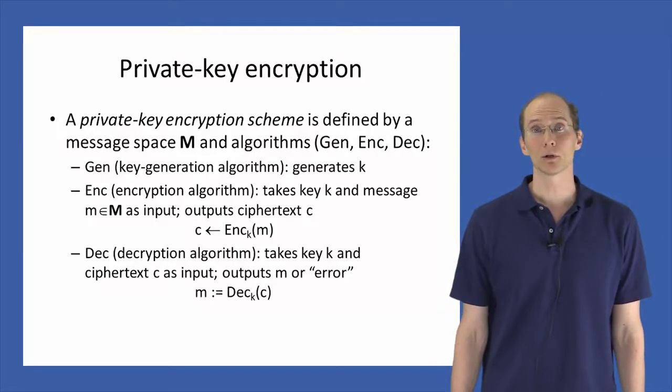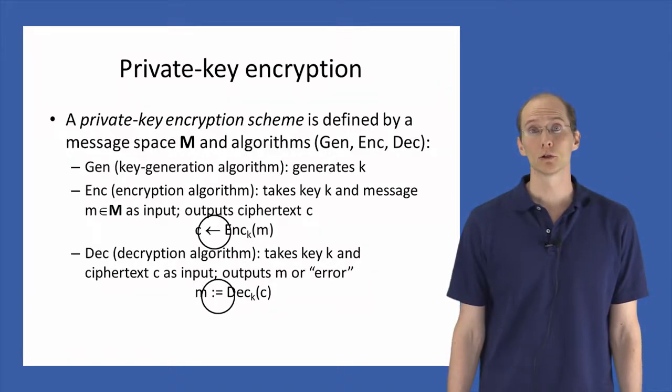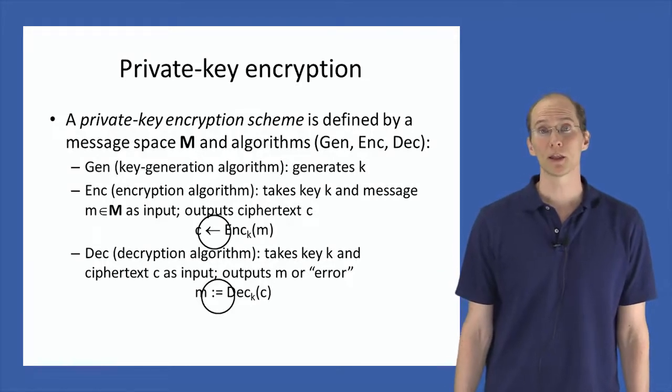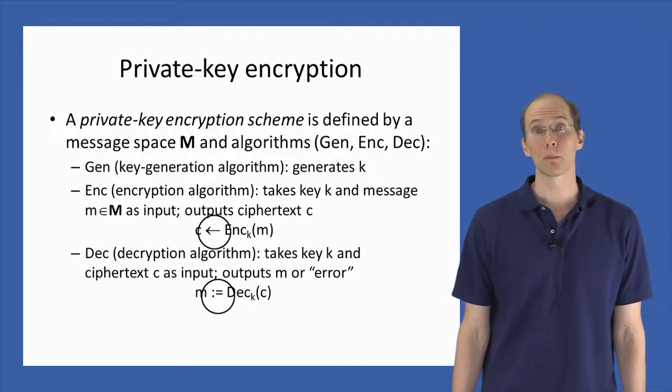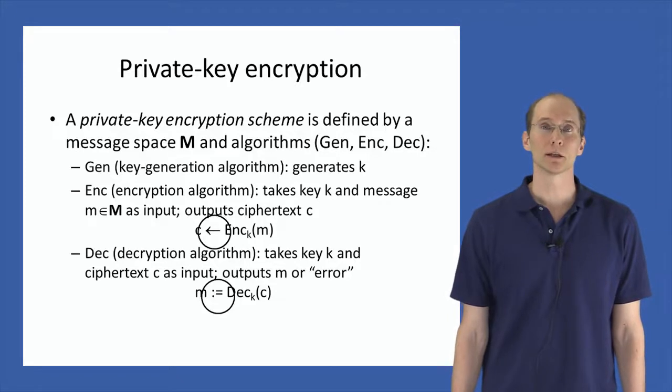I want to highlight here some notation I'll be using throughout the course. I use a left arrow to denote assignment to the output of an algorithm that might be randomized, meaning that the output of the algorithm may be different, even when run twice on the same set of inputs. I use a colon equals to denote an assignment to the output of a deterministic algorithm. So in this case, this means that we're allowing encryption to possibly be randomized, whereas we're assuming that decryption is deterministic. I use a single equal sign to denote mathematical equality in contrast to assignment.